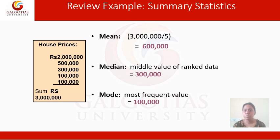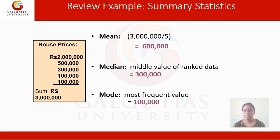The median is the middle value of the ranked data. Since the data is in an odd series of five values, we take 3 lakh as the median — the first and second values are 50% below, and the fourth and fifth are 50% above. For the mode, we look for the most frequent value. In this data set, 1 lakh repeats twice, giving it the maximum iteration. Therefore, the mode is 1 lakh.